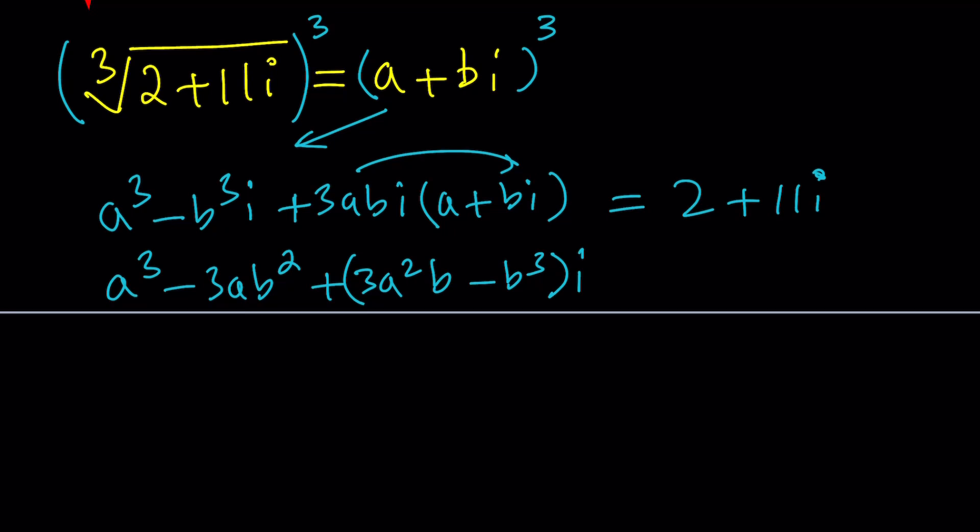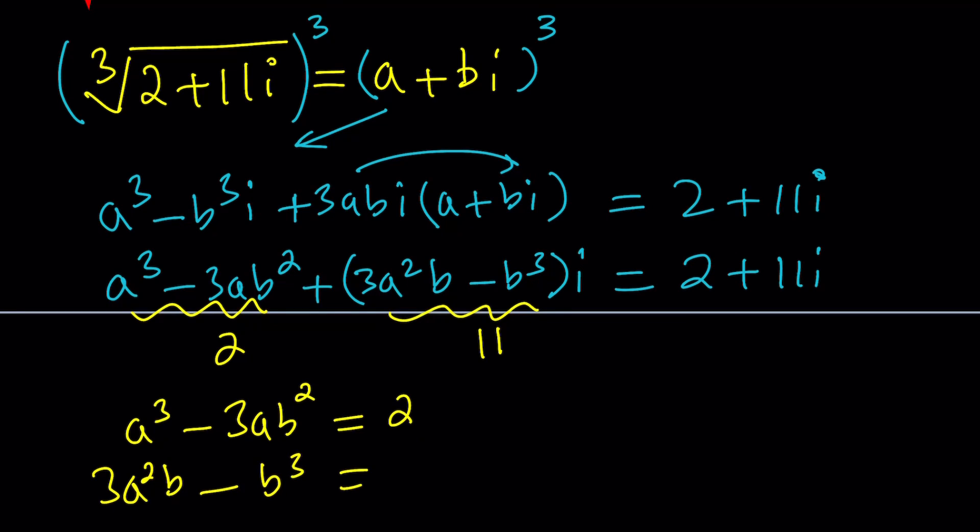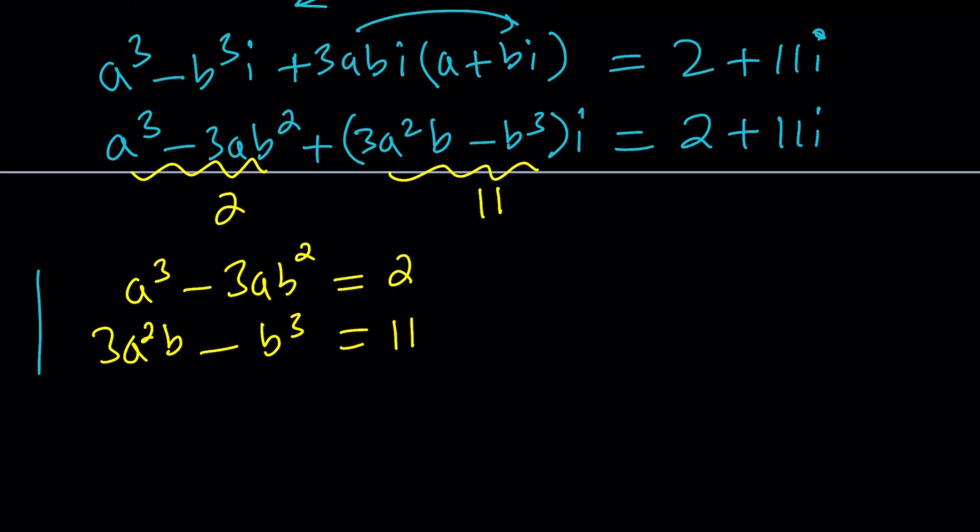And as you know, the real parts equals the real parts, and the imaginary parts should equal imaginary parts. That's how you can set two complex numbers equal to each other. So this is supposed to equal 2, and this is supposed to equal 11. And guess what? That gives us a homogeneous system. And that is A cubed minus 3AB squared equals 2, and 3A squared B minus B cubed equals 11. Anytime you see something like this, you can always think of complex numbers and their cubes.